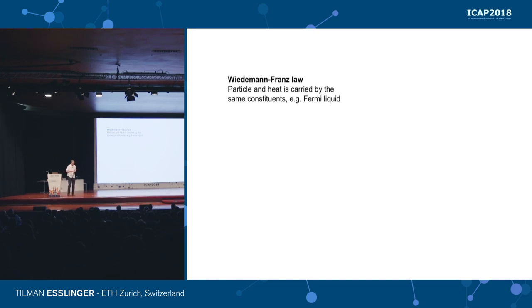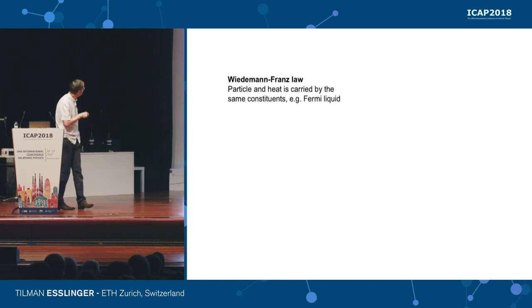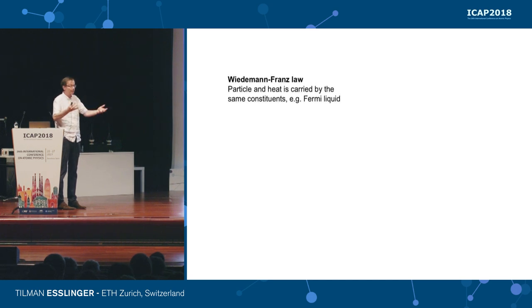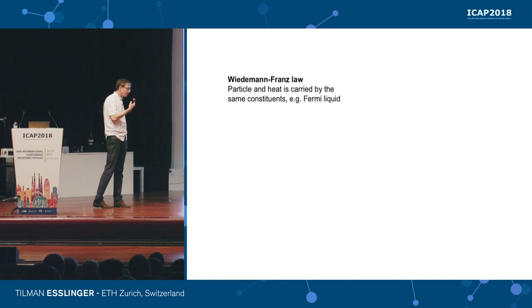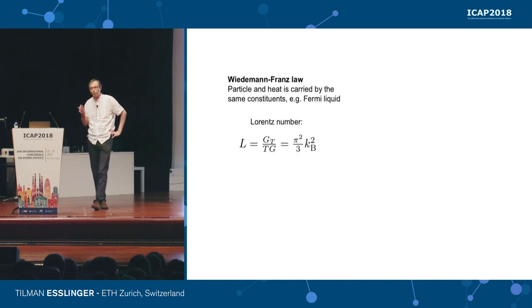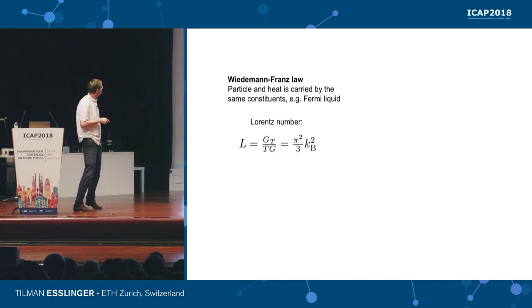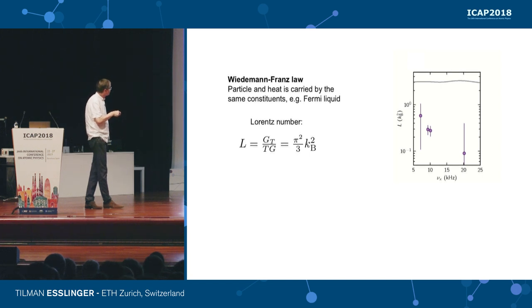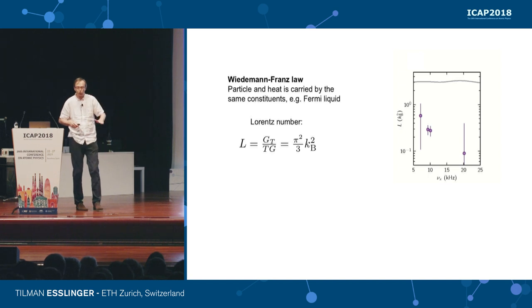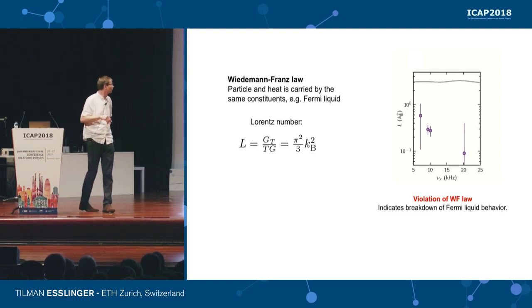One can also look at thermoelectric effects through the Wiedemann-Franz law, which states that particle and heat are carried by the same constituents — as is the case for a Fermi liquid. One consequence is a so-called Lorentz number, giving a relation between thermal conductance and particle conductance. For a Fermi liquid one gets a certain value, but we have a much lower value in our case — clearly not a Fermi liquid — and we observe a breakdown of the Wiedemann-Franz law.